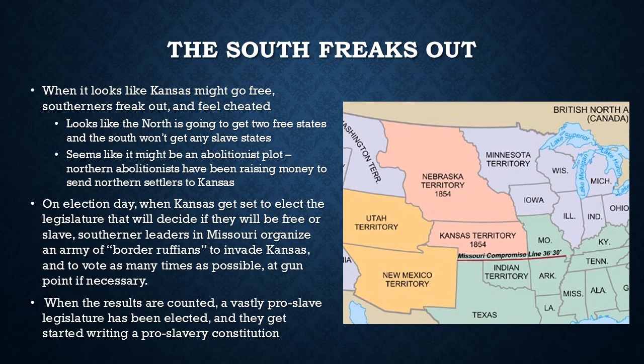It also seemed like abolitionists in the North might have been plotting this the whole time, because northern abolitionists had been paying northerners to move to Kansas to help it become a free state. So on election day, when the people of Kansas were going to vote on free or slave, thousands of southerners from Missouri — known as border ruffians — invaded Kansas and voted as many times as possible, sometimes at gunpoint, to make Kansas a slave state. When the results were counted, the slave votes vastly outnumbered the free votes, and it looked like the border ruffians had cheated the election.